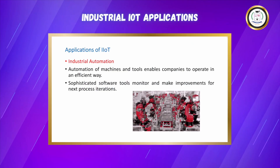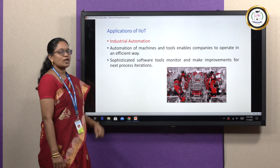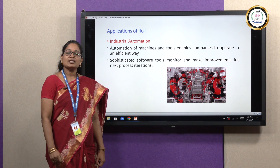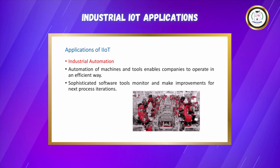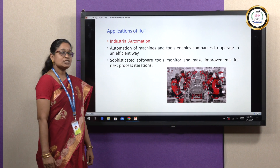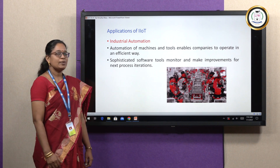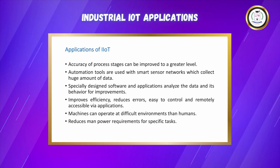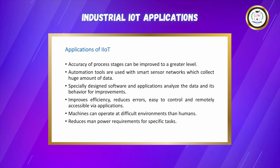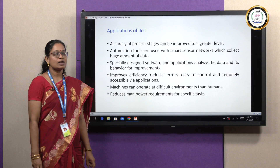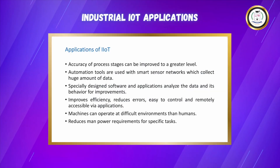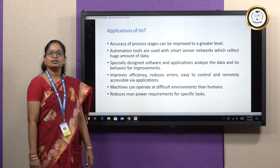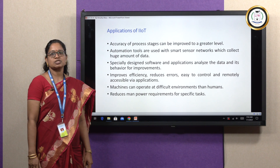Now let us look at the industrial applications of IoT. The first one is industrial automation. Industrial IoT finds great application in industrial automation. Automation of machines and tools enables companies to operate in a perfect and efficient way. Sophisticated software tools monitor and make improvements for the next process iterations. Accuracy of process stages are improved at a greater level. Automation tools are used with intelligent sensor networks. They collect huge amounts of data, and specially designed software and applications analyze the data and its behavior for further improvements. Thus, the efficiency is improved, errors are reduced, and it is easy to operate and remotely accessible through applications.